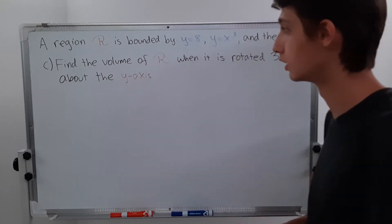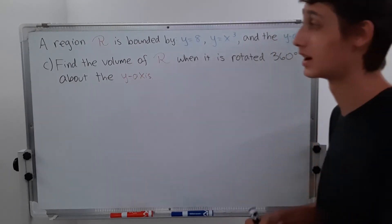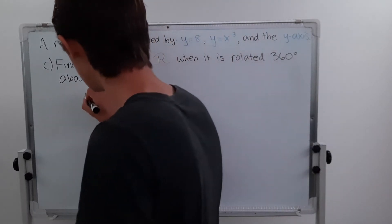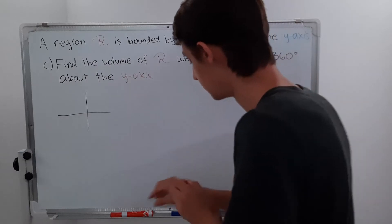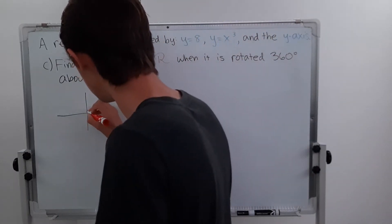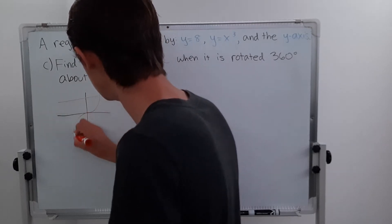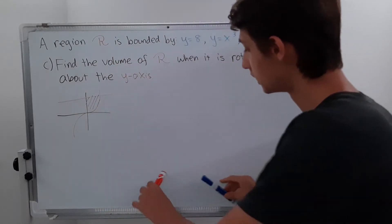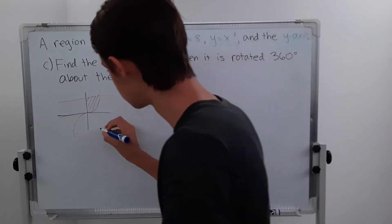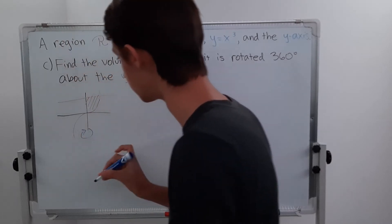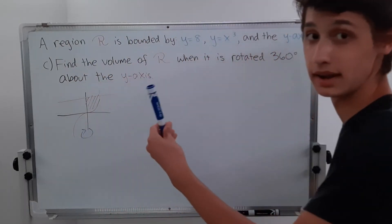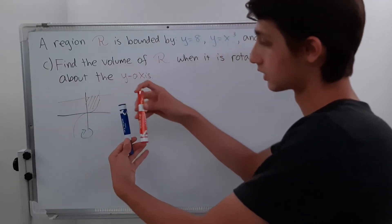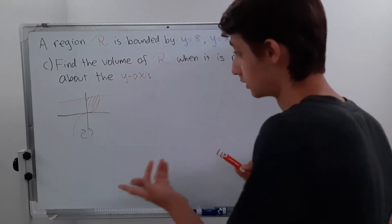For part C, we're going to find the volume of R when it is rotated 360 degrees about the y-axis. Let's redraw our diagram with y equals 8 and y equals x cubed. This is our shaded region R. We're basically rotating 360 degrees about the y-axis. Anything on this side is going to also rotate on the other side, so we copy it over — now it looks 3D, like a closed bowl shape.